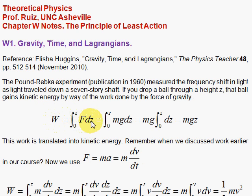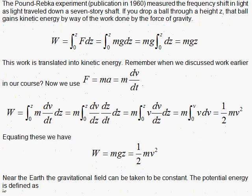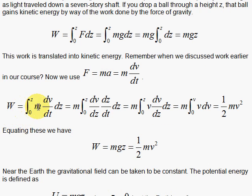Remember our definition of work is force times distance. So if you have a constant gravitational field, you have a constant force mg, and when you do the integral you get mgz, or mgh in many introductory physics classes. We're going to use z because h is going to be the Planck constant for us.